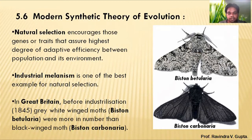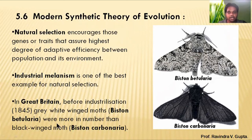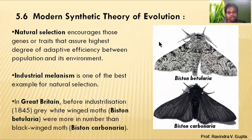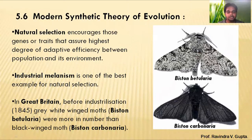The example comes from Great Britain. Before industrialization in 1845, the grey-white winged moth, Biston betularia, was more numerous than the black-winged moth, Biston carbonaria. You can see two pictures — the upper species is the white-grey Biston betularia, and the lower species is Biston carbonaria.